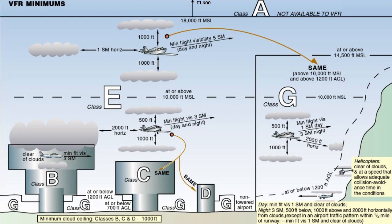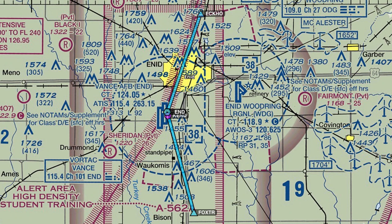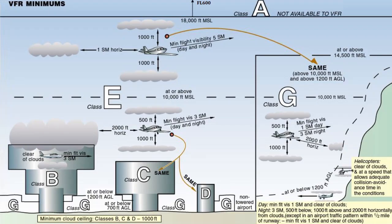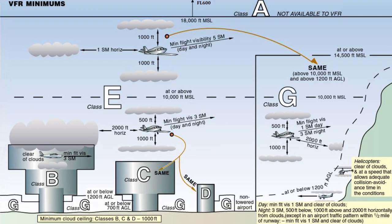When flying in the visual traffic pattern, you are VFR and must adhere to VFR weather minimums. Vance is a Class D airport and the radar release points of Echo and Foxtrot are in Class E airspace. To operate VFR at these locations, you must have at least 3 statute miles of in-flight visibility and remain 500 feet below and 2,000 feet horizontal from clouds. Breaking out of the visual pattern during restricted patterns is not allowed due to VFR weather minimums.